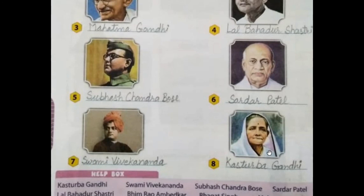The last one is Kasturba Gandhi. She was the wife of Mahatma Gandhi and an Indian political activist — activist means Karikarta. Thank you, see you in the next session.